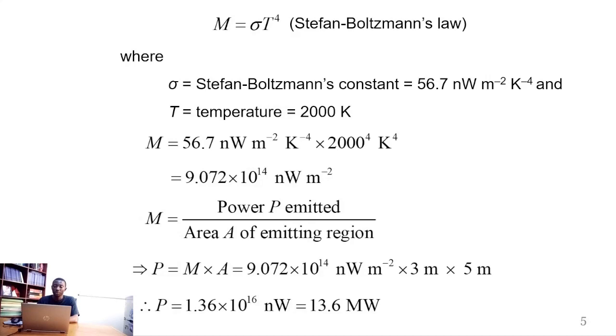Which we can write in terms of megawatt as 13.6 megawatts. To do that, we simply substitute 10 to the power of negative 9 and we multiply that. It leaves us with 10 to the power of 6, which is actually mega, if you remember our first introductory lecture to physical chemistry.